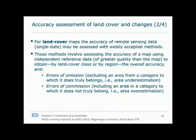For an accuracy assessment of a land cover map, one requirement is independent reference data to compare a sample of the data to and assign each sample a class label based on that reference data. It is important for the reference data to be of higher quality than the map, meaning better spatial, temporal, or radiometric resolution. The assessment will quantify errors of omission — resulting in an area excluded from the class it truly belongs to — and errors of commission, resulting in an area included in a class that does not belong.